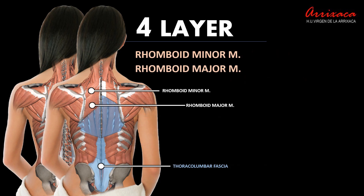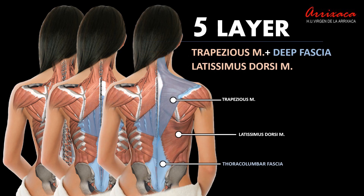The fourth layer, superficially, would be formed by the muscles rhomboid minor and major, which extend to the posterior border of the scapula. The most superficial muscular plane would be formed by the trapezius muscle and the second aponeurotic fascia found in the posterior thoracic wall — the deep fascia.